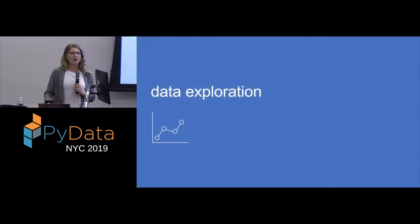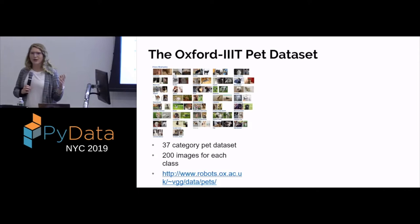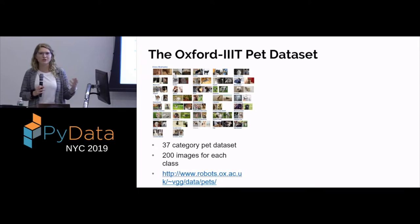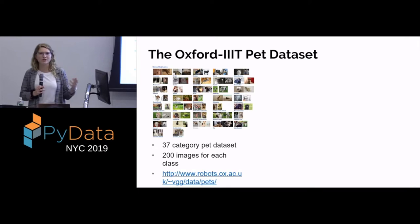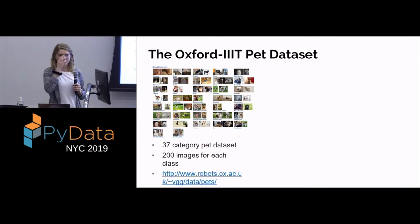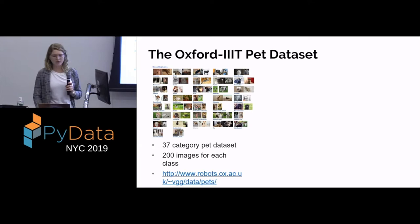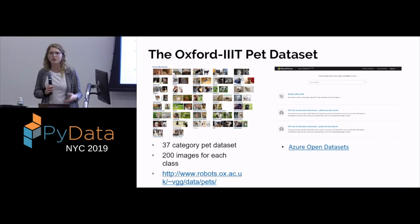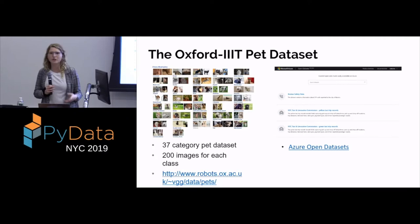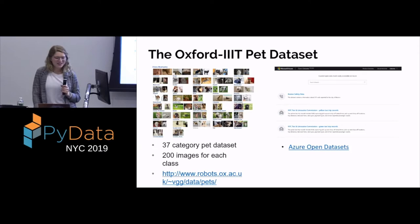The data set we're using is the Oxford Pet Data Set — a super popular data set that's fun to work with because you get to look at pictures of dogs. It has around 37 categories of pet breeds, it's a pretty well-labeled data set, and it has a few hundred-ish images, varying a bit by breed. I also wanted to point you to Azure Open Data Sets — a resource we're investing in to publish open source data sets for people to learn from and try out different machine learning techniques.